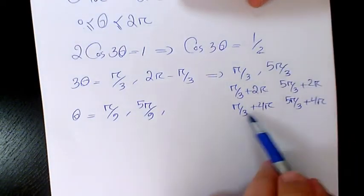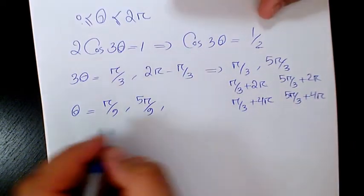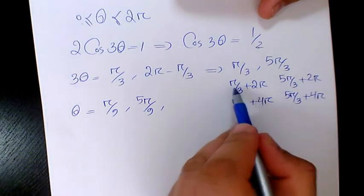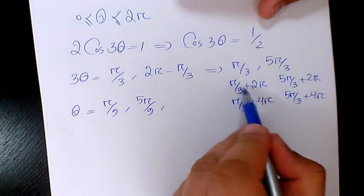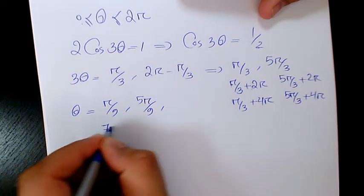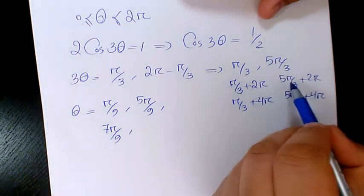It's going to be π over 3 plus 2π is going to be 7π over 3, divided by 3 is going to be 7π over 9. Here, 5π over 3 plus 2π is going to be 11π over 9.